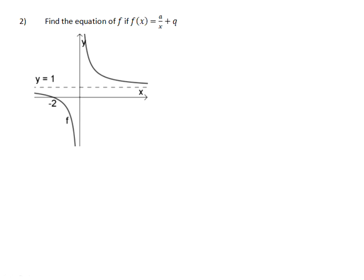Question two, find the equation of f if f of x is equal to a over x plus q. If you have a look at the given information, you can see that they have given you the horizontal asymptote at y equals one, which means that we've shifted this graph one unit up. And we've been given the value of the x-intercept, so we can infer that the coordinates of that point are negative two and zero. So f of x is equal to a over x. We can already say that the q value is positive one, because we've moved the graph one unit up.